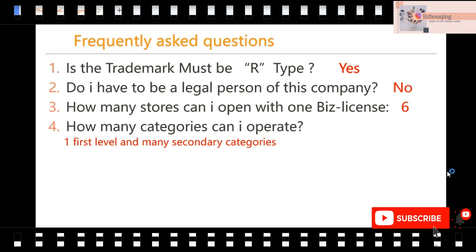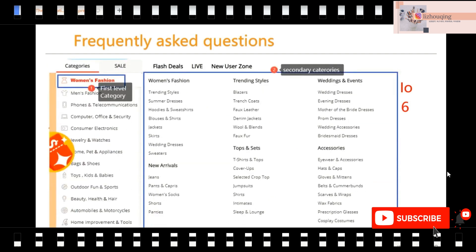How many categories can I operate within one store? In one store, you can only post one first-level category. Of course, you can post all the products of the sub-categories under it. For example, if you open a store with the category 'women's fashion' — this is the first-level category — you have the right to post all the products of the secondary categories under this first-level category, such as jackets, shirts, jeans, cover-ups, etc. So you have only one first-level category but can post all secondary category products.